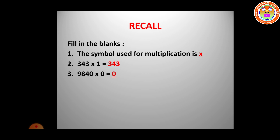Any number multiplied by zero, we will get the answer as zero. Nine thousand eight hundred and forty multiplied by zero is equal to zero. Eight thousand seven hundred and fifty-six multiplied by ten, we get the answer eighty-seven thousand five hundred and sixty.